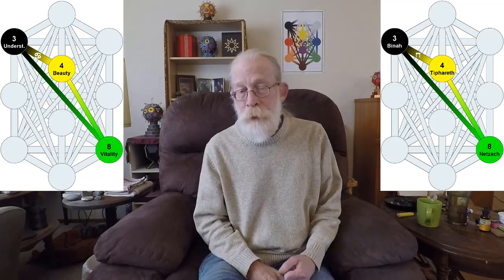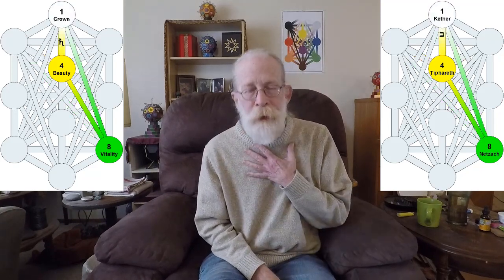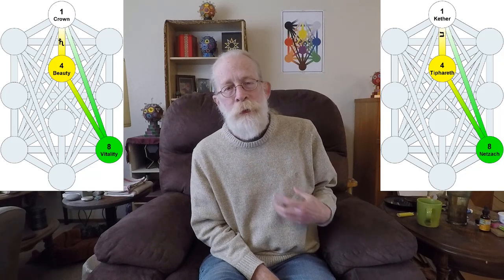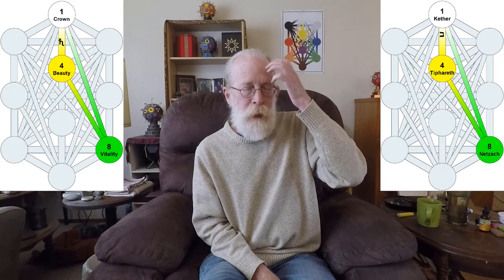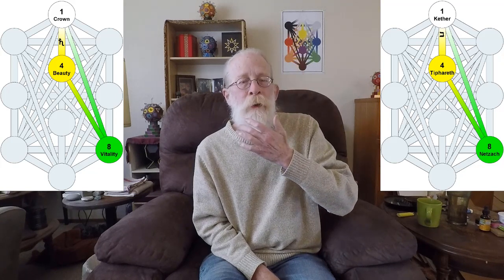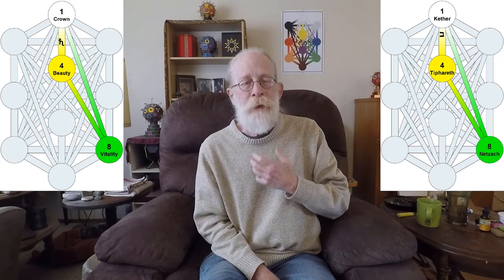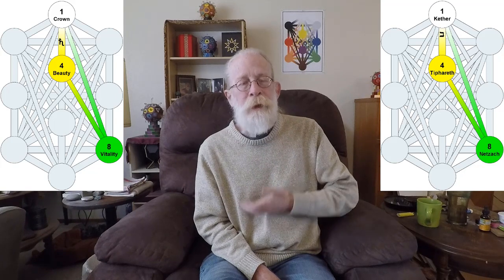The third gate starts again from Tiferet, goes down to Netzach, and then takes the hidden path up to Kether. And then down the path of Beth, and then back around.